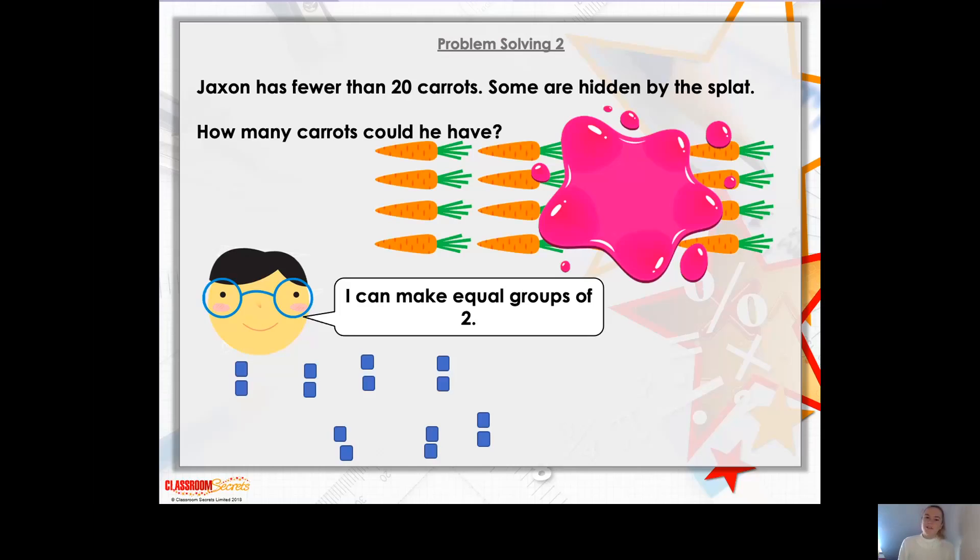OK, your turn. So were you able to put 15 carrots in equal groups of two? No, you weren't, because it's an odd number. So therefore there'll be one left over. What about 16? Yes, you can do 16, can't you? What about 17? No, that's an odd number.